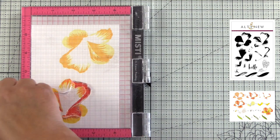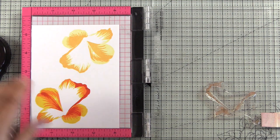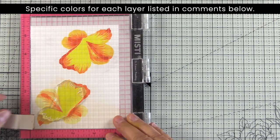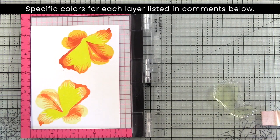The third layer is autumn blaze, the fourth layer is citrus burst, the fifth layer is maple yellow.